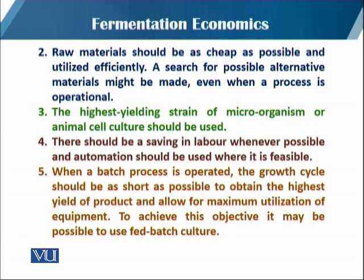The third objective is that the highest yielding strain of the microorganism or animal cell culture should be used — as discussed when talking about the selection of the organism. The fourth objective is that there should be a saving in labour whenever possible, and automation should be used where it is feasible, in order to reduce cost.